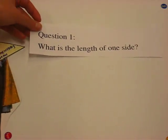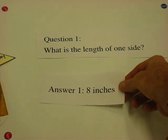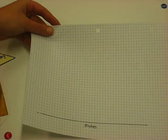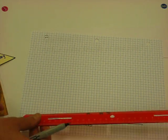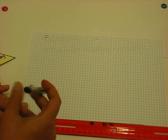First question, Geometry Girl. What is the length of one side? Eight inches. Okay. Eight inches.